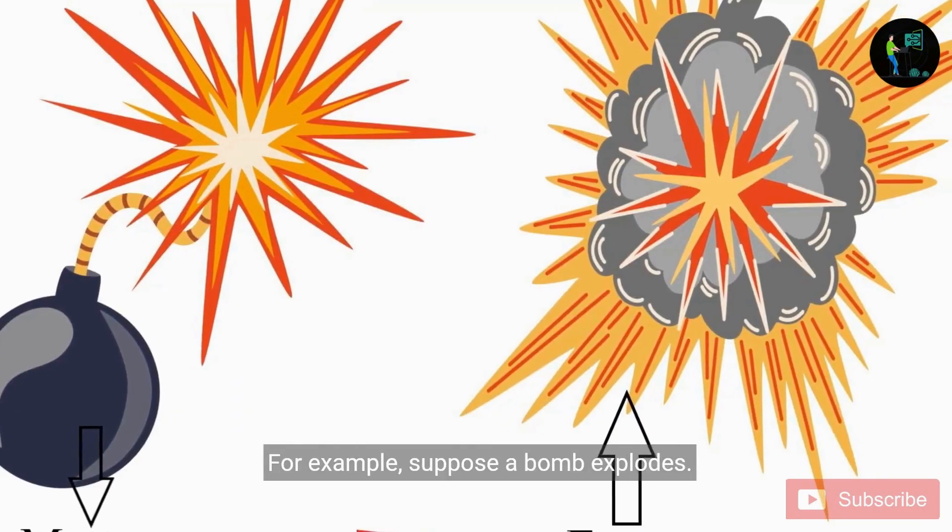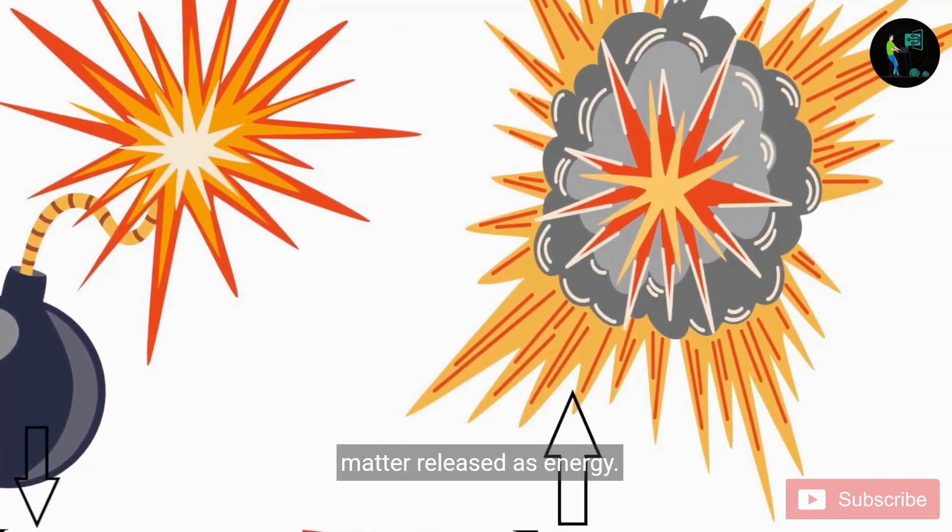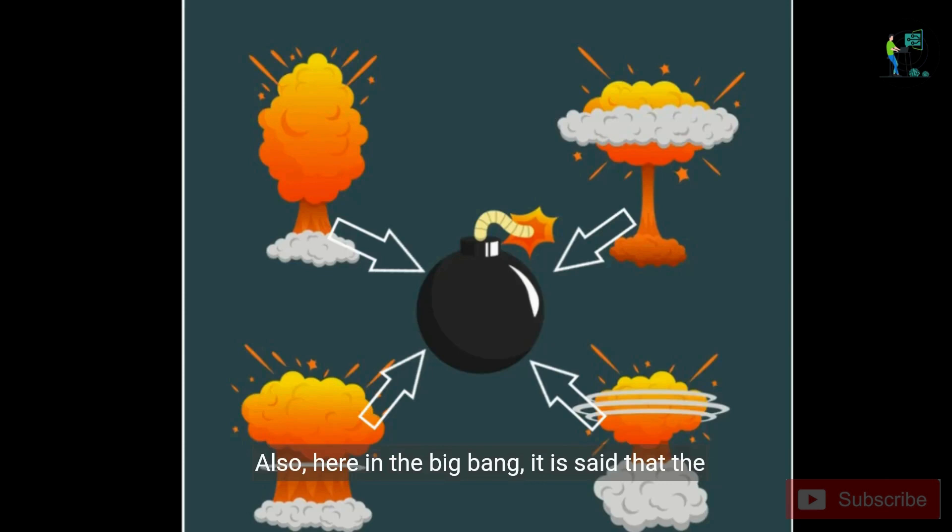For example, suppose a bomb explodes. The little matter that should have been there is released as energy. Also, here in the Big Bang, it is said that the reverse energy has turned into matter particles. That is, the energy is here converted into matter.